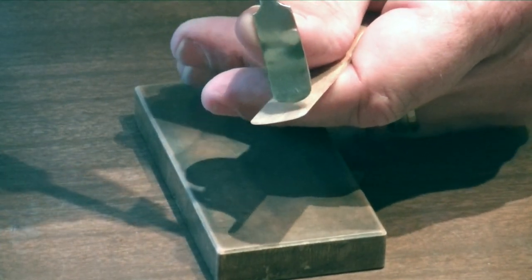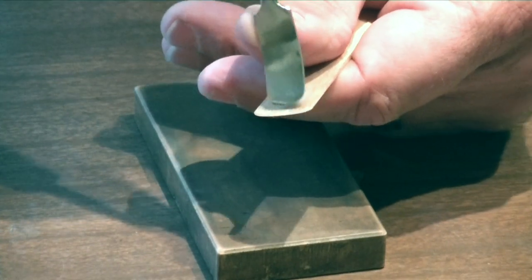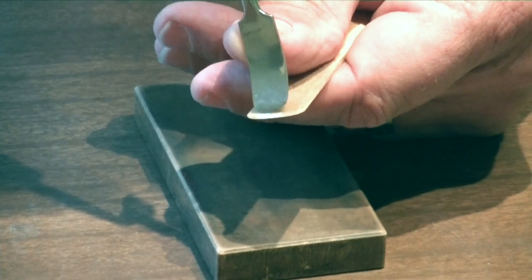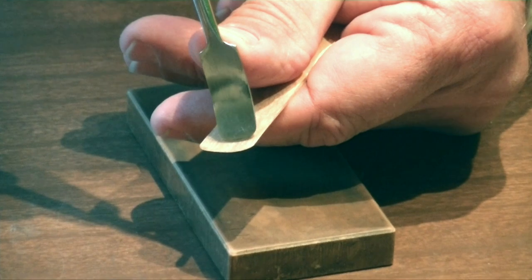I can press on the tip of the reed to see how much flex there is, how much bend there is, which means how much response I will get from the reed. This side of the reed is bending more. This side of the reed is more resistant.